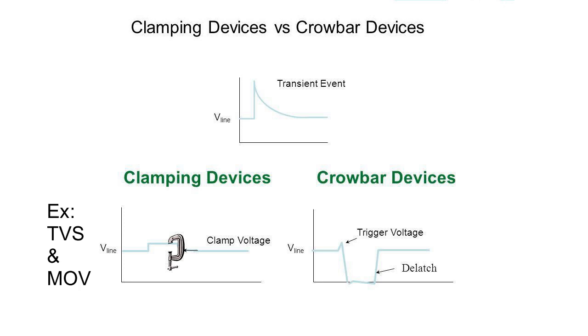Crowbar devices conduct when threshold voltages are exceeded and then trigger to an on-state voltage drop of only a few volts, hence the name Crowbar. These devices restore to non-conduction when the driving voltage and/or current is reduced with the passing of the transient.